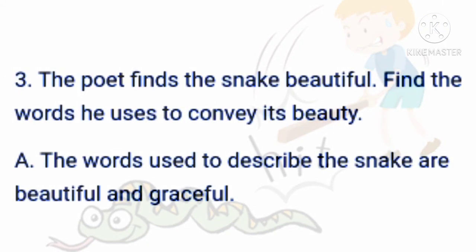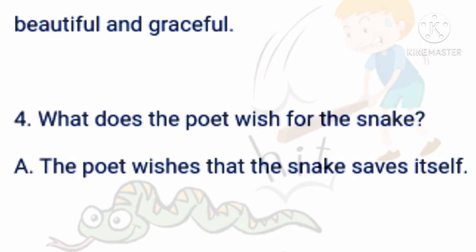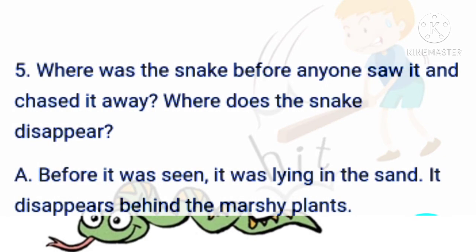Next question: The poet finds the snake beautiful. Find the words he uses to convey its beauty. Answer: The words used to describe the snake are "beautiful" and "graceful." Next: What does the poet wish for the snake? Answer: The poet wishes that the snake saves itself. Another question: Where was the snake before anyone saw it and chased it away, and where does the snake disappear? Answer: Before it was seen, the snake was lying in the sand, and the snake disappears behind the marshy plants.